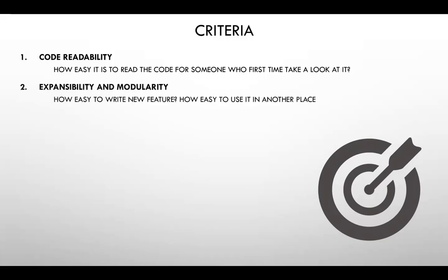Second: scalability and modularity — two similar but different concepts. Scalability is how easy it is to expand an already-written application into something bigger. Modularity is how easy it is to take one part of the application and use it somewhere else — even in another application, make a library from it, or use it as a plugin.